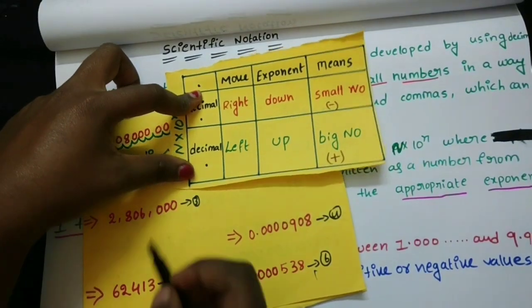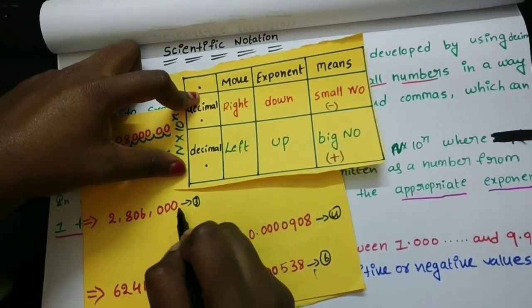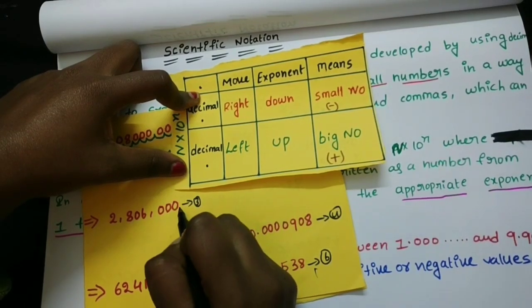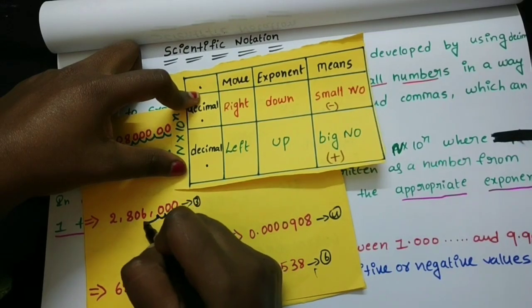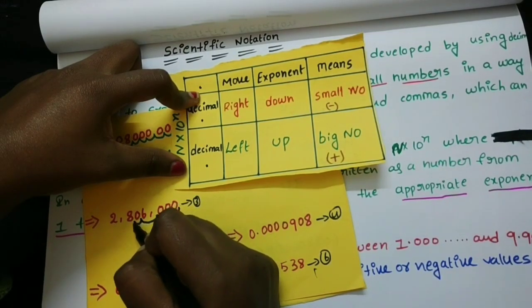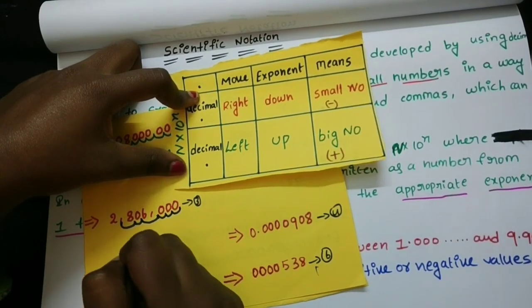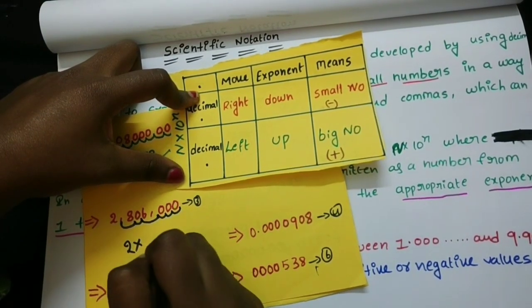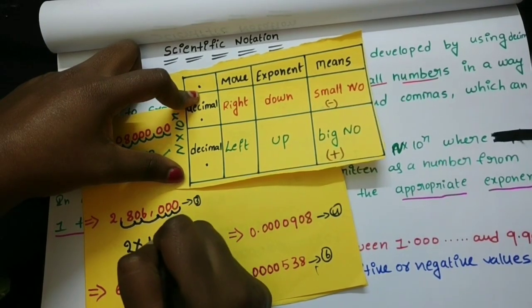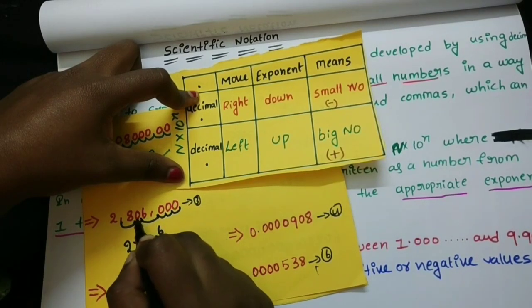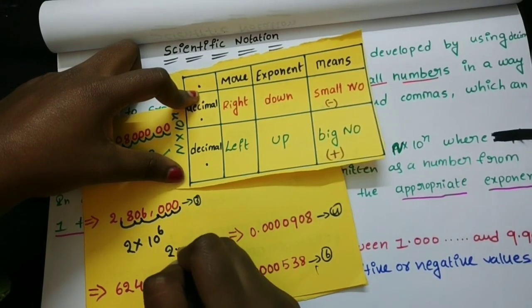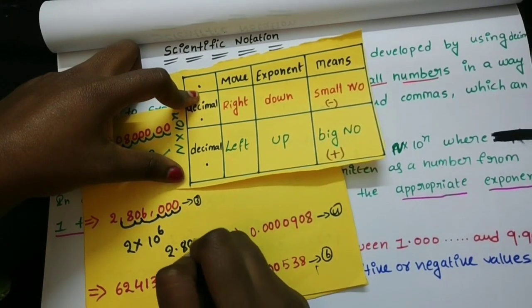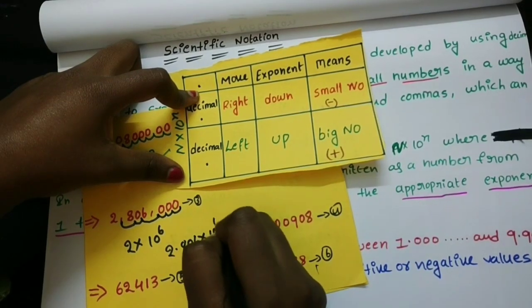For the third example, there is no decimal here. Counting the places: 1, 2, 3, 4, 5, 6 — that is 6 places. So the answer is 2.806 into 10 to the power of 6. Moving 6 places to the left gives a positive exponent for a big number.